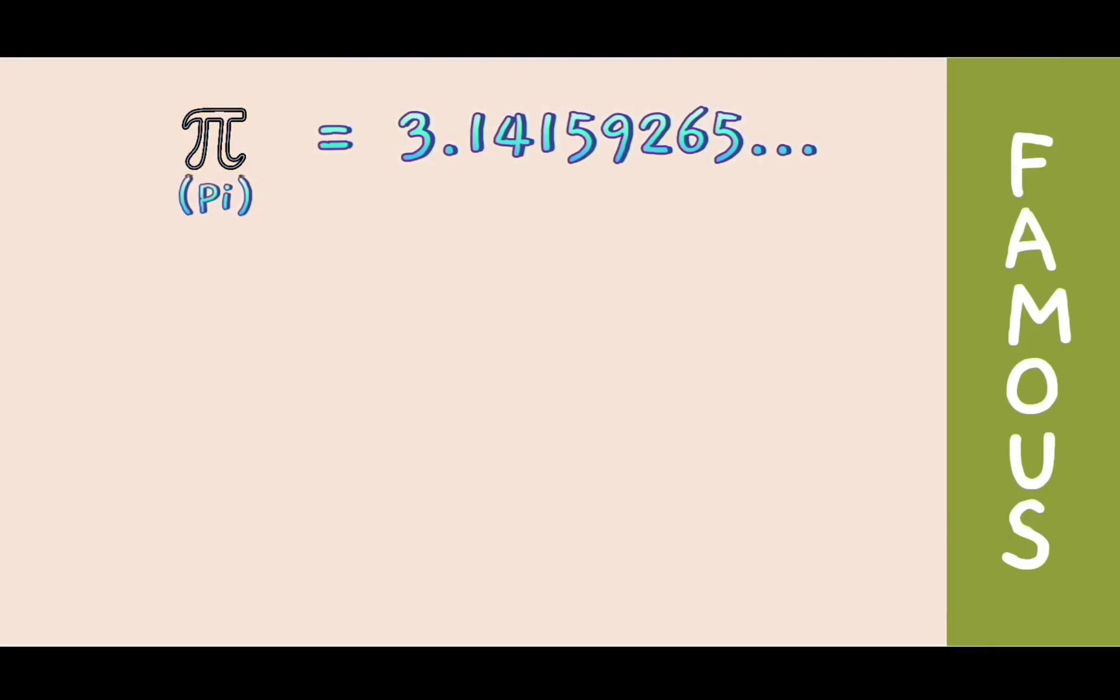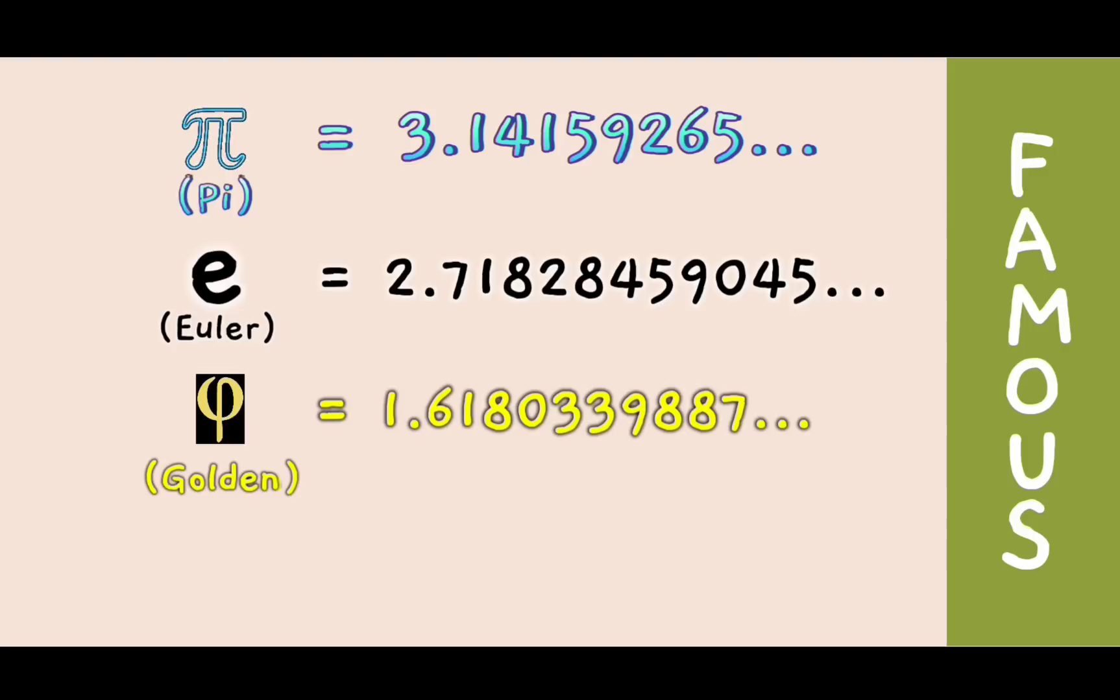Like pi, there are other famous irrational numbers in mathematics. Euler number, golden number, square root of 2 and so on.